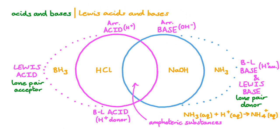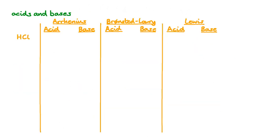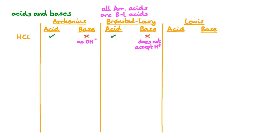Let's look at some examples, starting with hydrogen chloride, HCl. HCl is an Arrhenius acid — it has hydrogen ions that it can donate to water. But it's not an Arrhenius base, since it doesn't have any hydroxide ions. All Arrhenius acids are also Bronsted-Lowry acids, since they donate protons. But HCl is not a Bronsted-Lowry base, because it does not accept more protons. HCl is also a Lewis acid, since all Bronsted-Lowry acids are Lewis acids. We can see HCl can be attacked by the lone pair of ammonia, a Lewis base. But, except under extreme circumstances, HCl will not behave as a Lewis base.